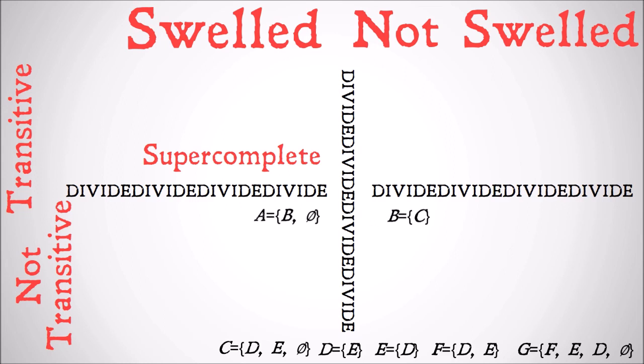C contains as members D, E, and the null set. Let's see if it's swelled. It has the null set, so there's a possibility. The only subsets of D are D itself, the set just containing E, and the null set — both of those are contained in C. E has as its subclasses the set only containing D and the null set — both of those are also contained in C. And the only subclass of the null set is the null set itself, which is contained. So C is swelled.